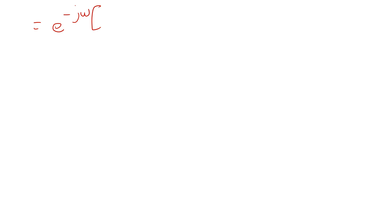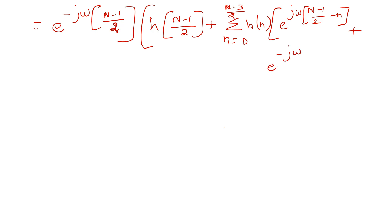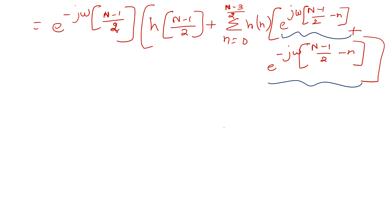Further reducing this, we multiply the power factors inside. This will become e^(-jω(N-1)/2) into h((N-1)/2) plus summation n equal to 0 to (N-3)/2 of the bracketed exponential terms. If we expand using e^(jθ) equals cos θ plus j sin θ and e^(-jθ) equals cos θ minus j sin θ, the sine terms cancel out.